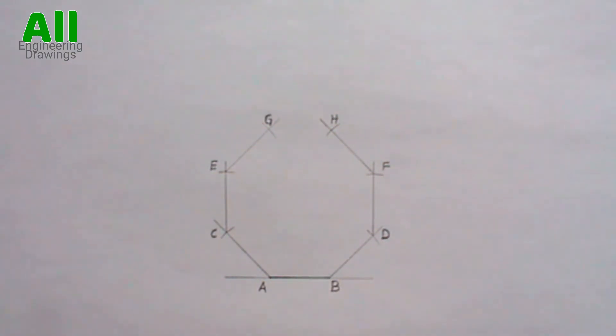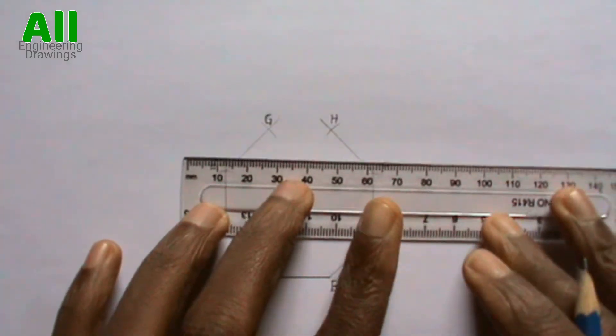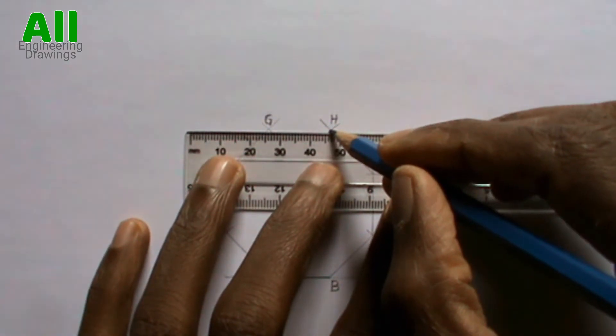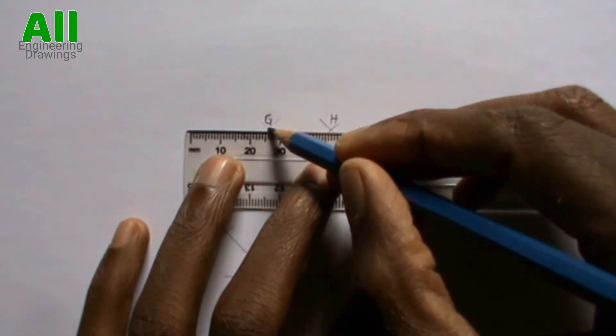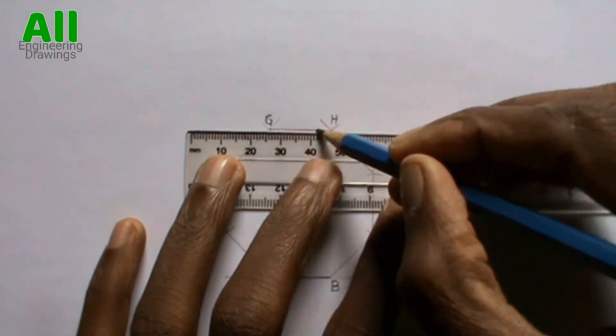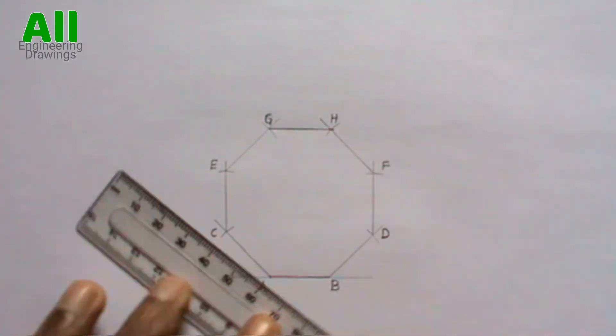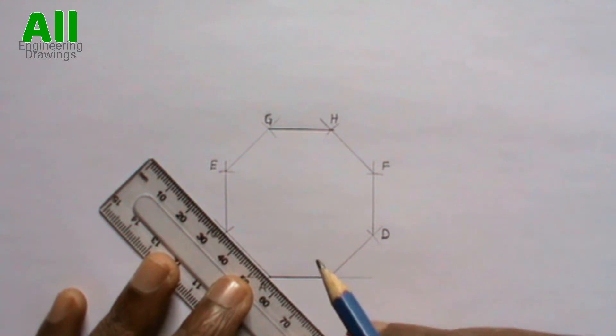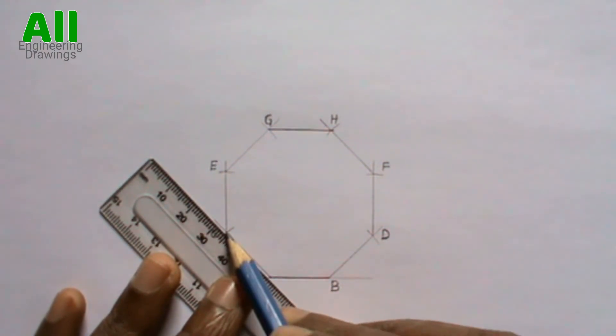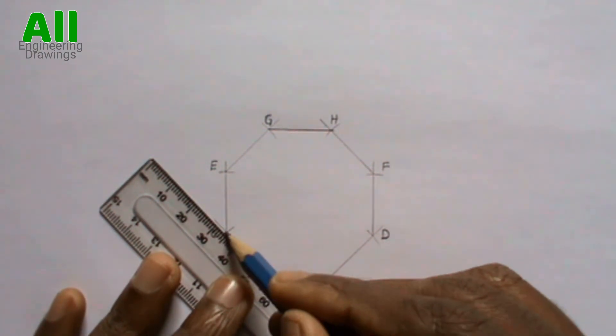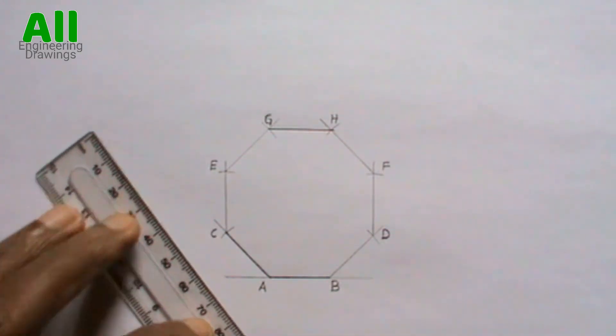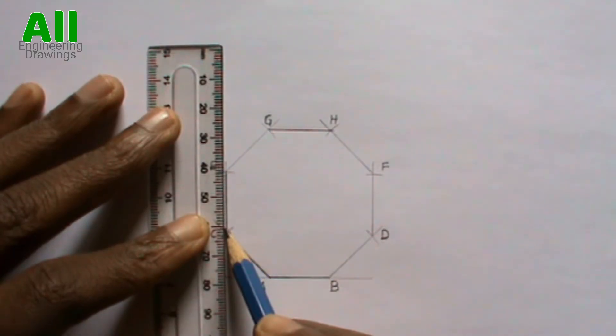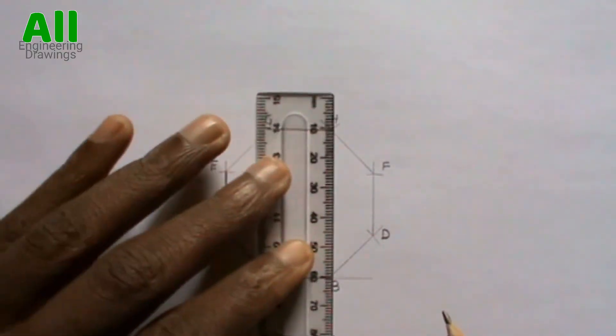Draw a line to join point G and H. Now you can complete your drawing.